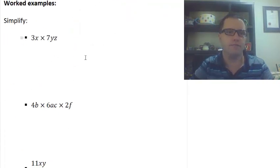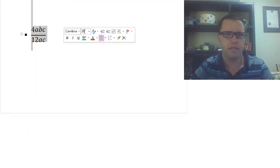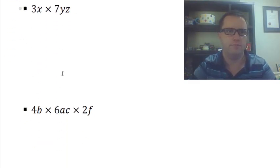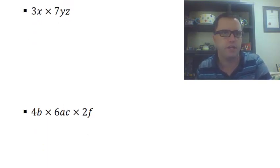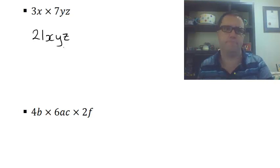All right, let's have a look at some worked examples here. Our first one, 3x times 7yz. The first thing we do is multiply our numbers together. So 3 times 7 is 21. Now we multiply our letters together: x times yz is just xyz. Done. We don't smash them to get a new letter, we just leave them as xyz.